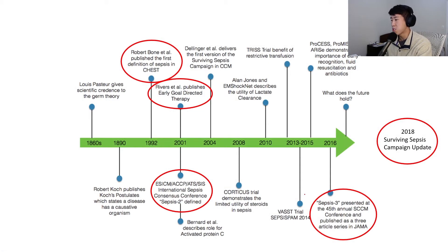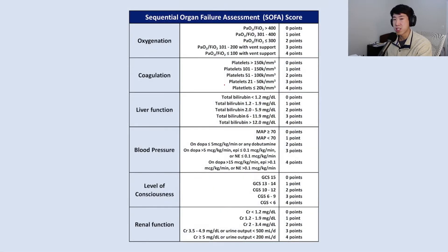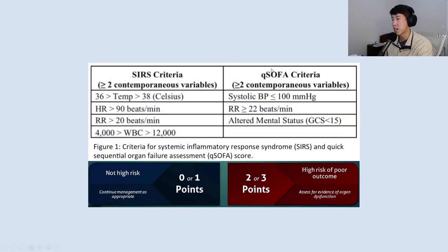That's why in 2016 they introduced Sepsis 3. Instead of the SIRS criteria, they wanted to use a new scoring tool called the SOFA score, which was again quite complex. So they introduced a bedside score called the qSOFA, which has just three components: systolic blood pressure less than 100, respiratory rate greater than 22, and altered mental status defined by a GCS less than 15. With qSOFA, two or more points indicates high risk of a poor outcome.